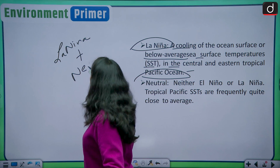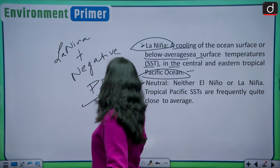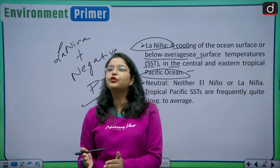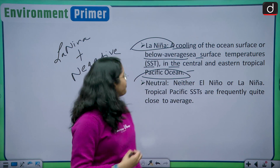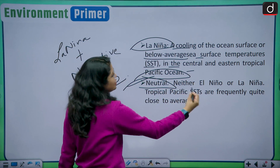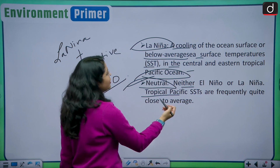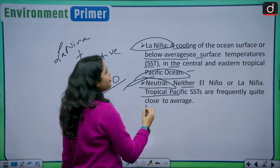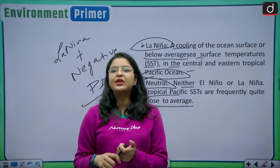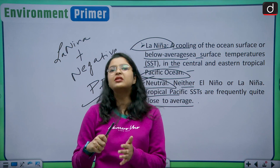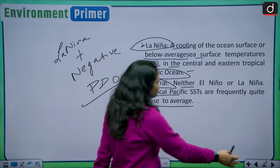La Niña plus negative PDO actually increases rainfall in India above the average. There is also a neutral phase of ENSO where it is neither El Niño nor La Niña and tropical Pacific sea surface temperatures remain close to average. So ENSO has three phases: the El Niño phase, the La Niña phase, and a neutral phase.